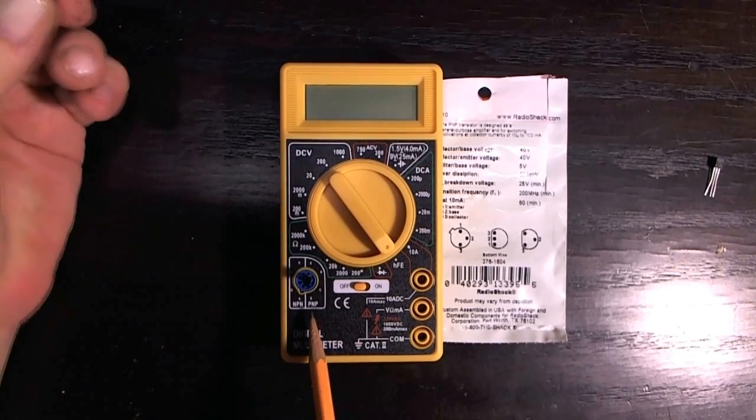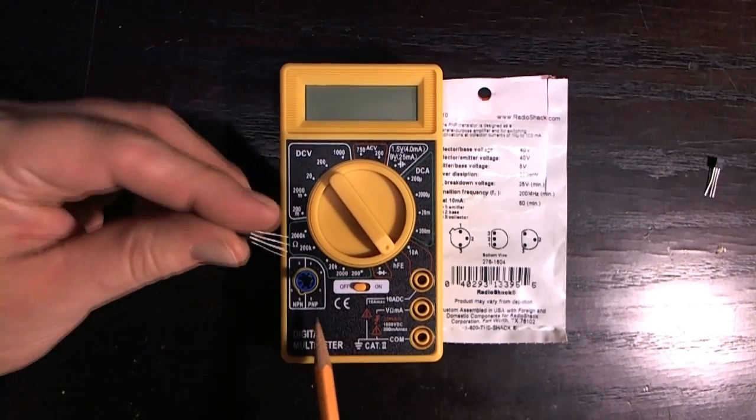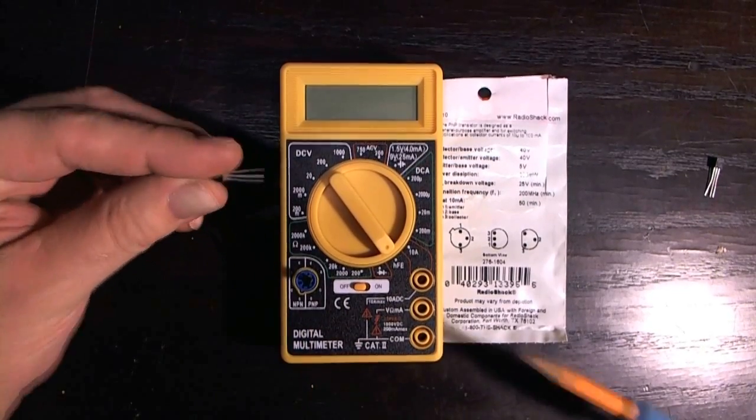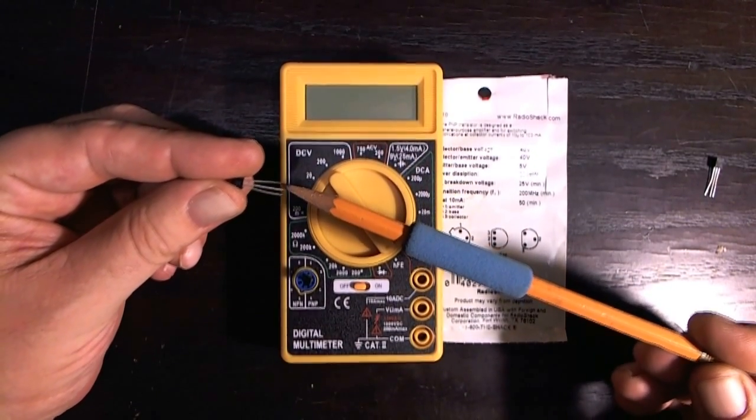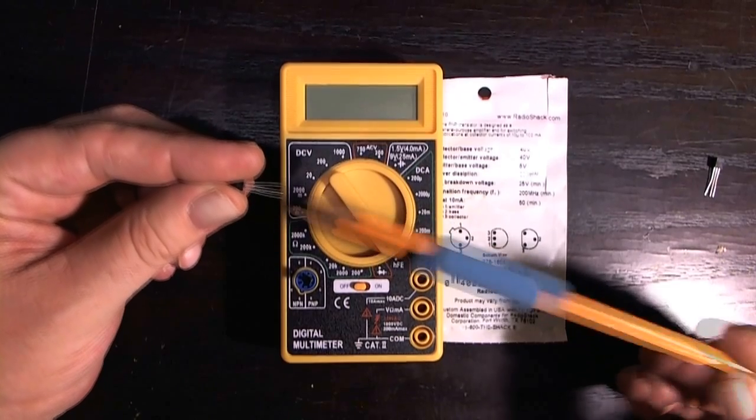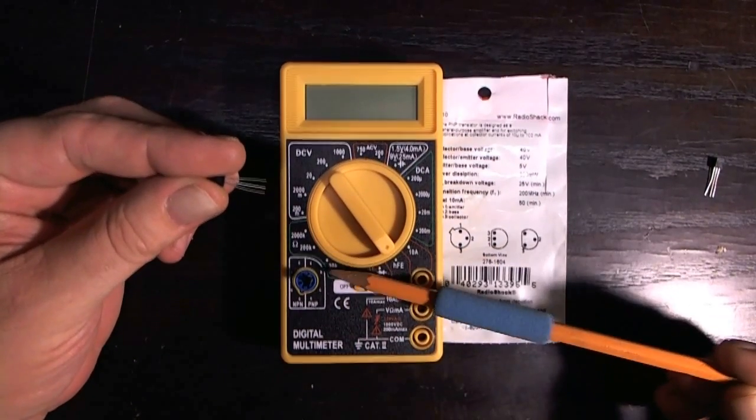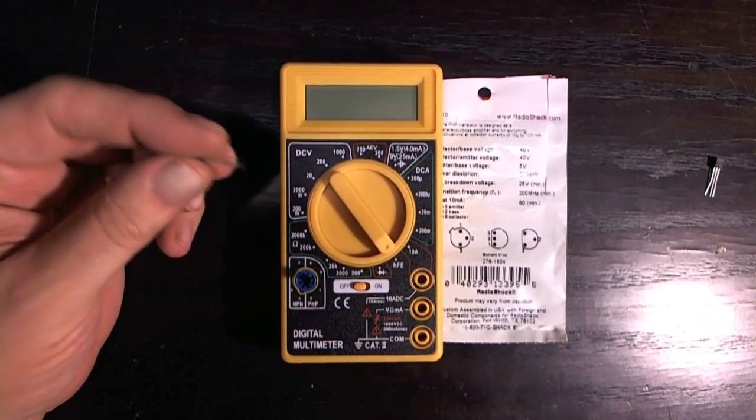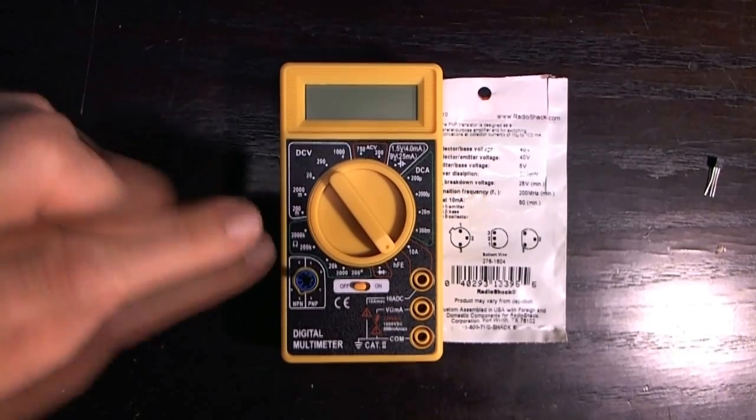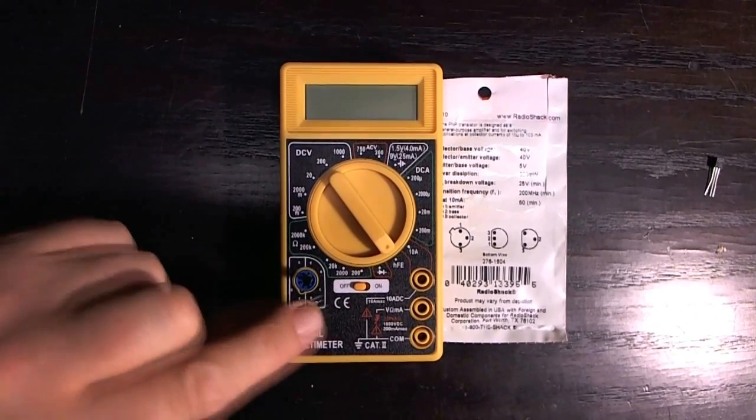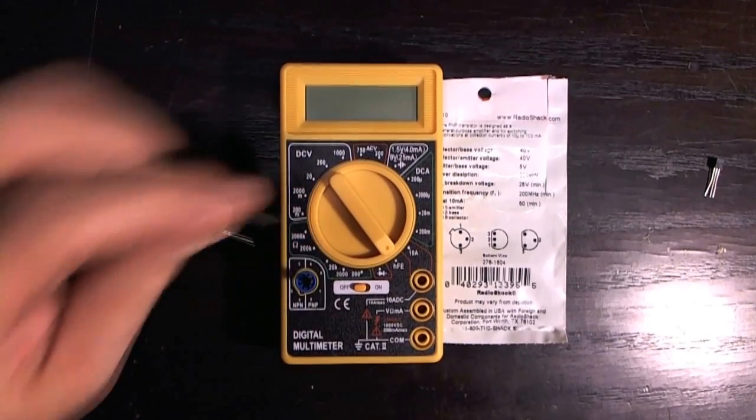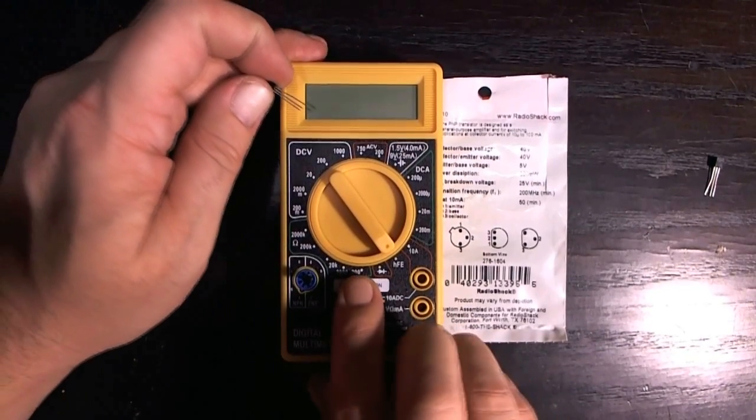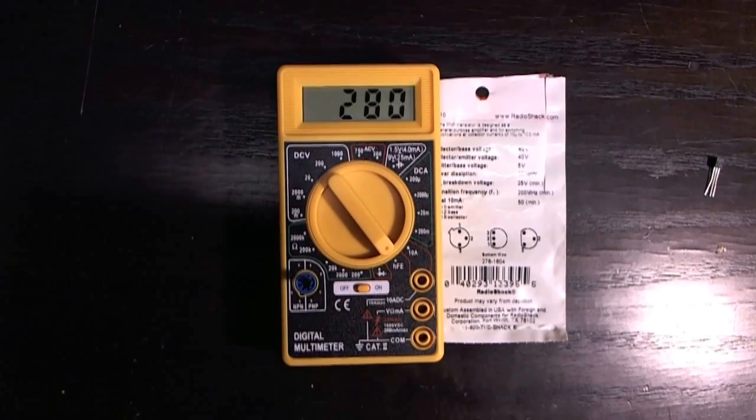And also, when you get that data sheet or the information about this part, it's going to show you the pinout. So you could see that this is collector, this is base, and this is emitter, or vice versa. And those are labeled here on the meter. So you need to determine how you're going to plug in first, what it is, and where you need to be plugging it in so the EBC lines up. It probably isn't good to be plugging them in willy-nilly and backwards.